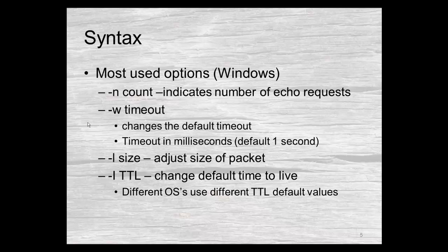By default it times out in one second, but you can change that timeout — shorter or longer — by using the -w flag followed by a value. For example, 500 would be 500 milliseconds, which is half a second. The -i flag will change the time to live, and the -l flag will change the size of the packet or buffer. Those are the common switches and options. Most of the time, all you're going to do is type ping and then the host you want to ping.